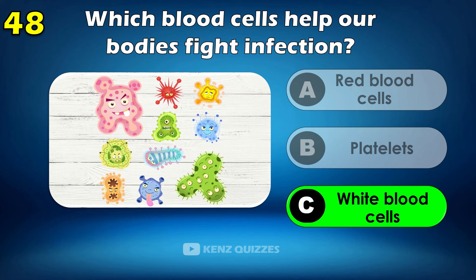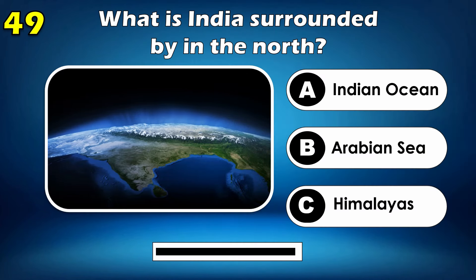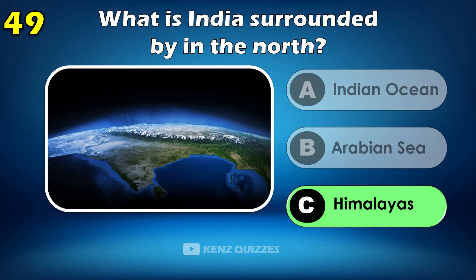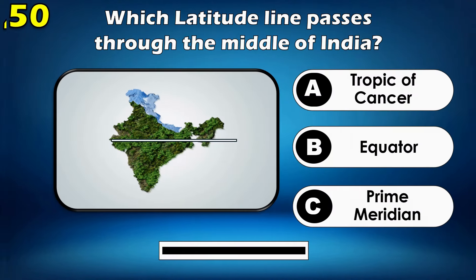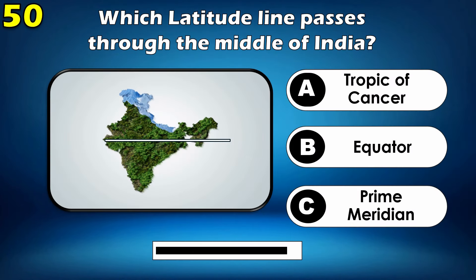Which blood cells help our bodies fight infection? White blood cells. What is India surrounded by in the north? The Himalayas.